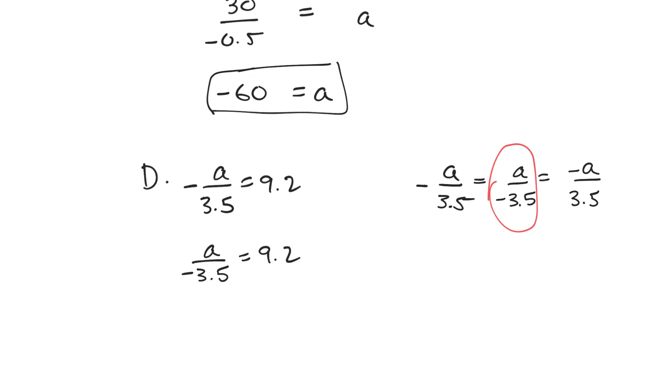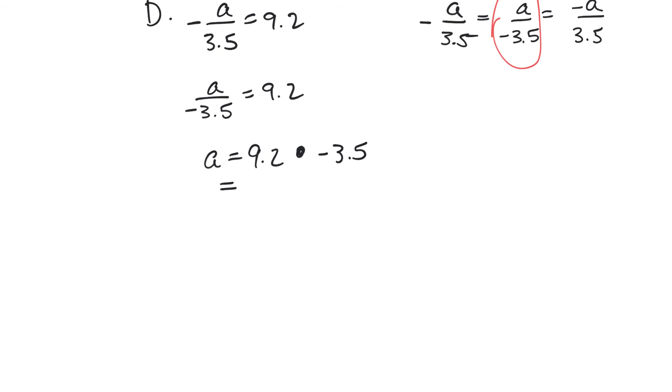So a then, a is equal to 9.2 times, I'll put a big dot for times, negative 3.5. And so, yeah, negative 3.5. And that product is, it is negative, negative 32.2. So that is what a is said to be when you solve for it.